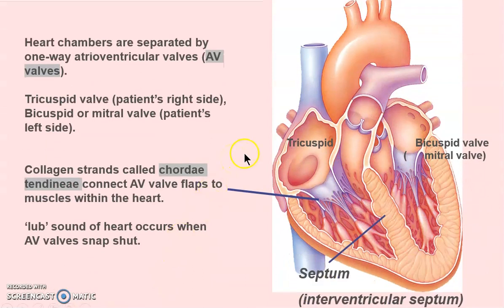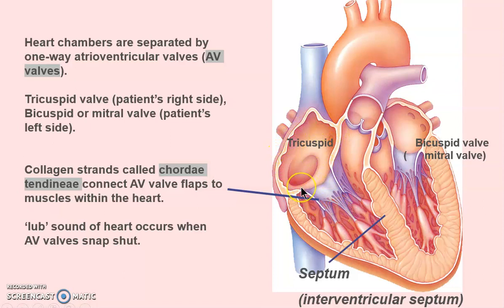AV means atrioventricular. Here's the atria, here's the ventricle — there are valves between the two so that blood doesn't go backwards. These valves have different names: they are AV valves, but they're also called tricuspid.